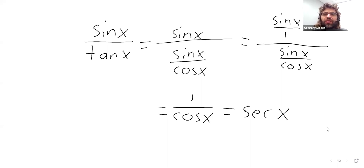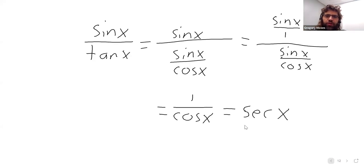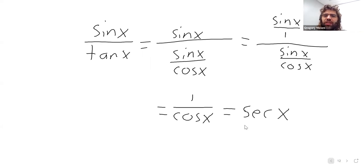we would if instead of having trig functions, we'd had like seven over seven ninths or something. No, the sevens would cancel here. The sines cancel in exactly the same way. Yeah. Thank you.